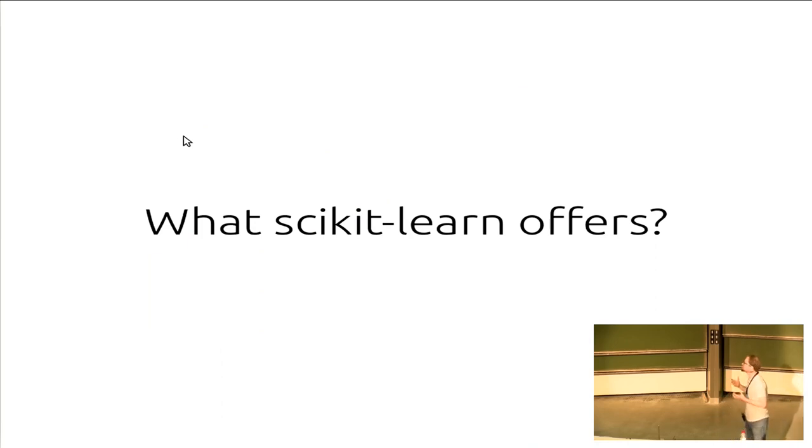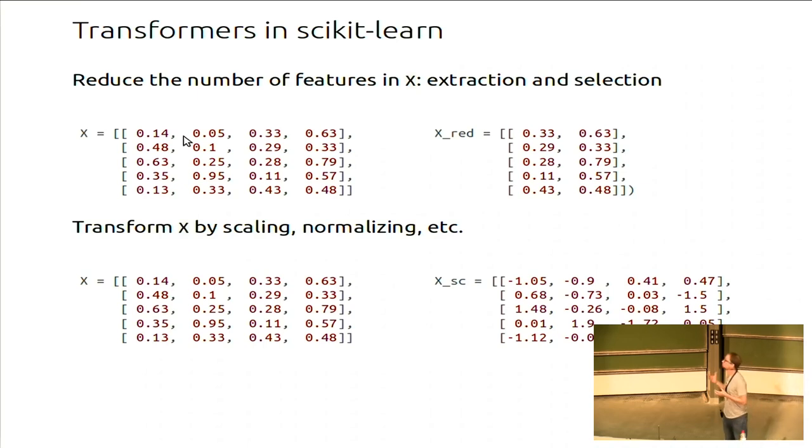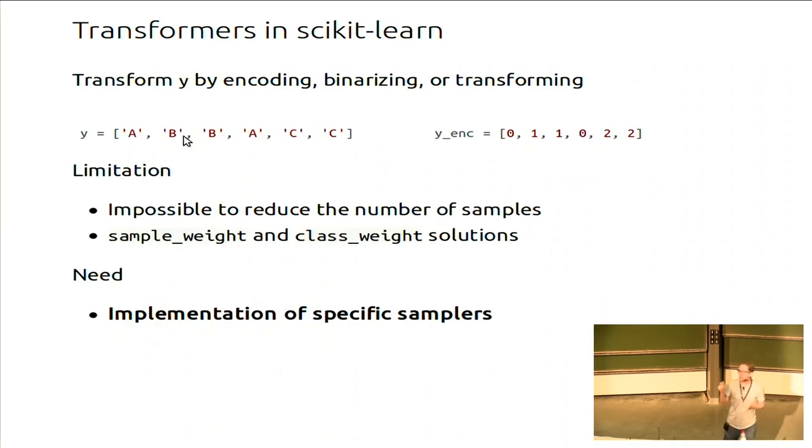So right now you could think, what can Scikit-learn offer to deal with those problems. There is a type of thing that you have in Scikit-learn, which is transformers, and those transformers can allow you to do several things. One of them is to actually select a column of your datasets, so select some features, or it can also allow you to normalize or scale those features. However, there is nothing dealing with resampling the Y, and the only thing that is available for your Y is to actually encode the labels to have something between zero and the number of classes. So there is a limitation there, where you cannot re-slice the number of samples in X and Y. There is something that you can trick. You can use sample weight and class weight to actually maybe have such things. So we need specific implementations for dealing with reducing the number of samples and implementing samplers.